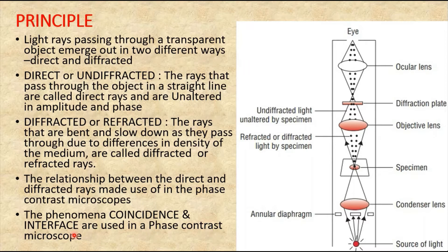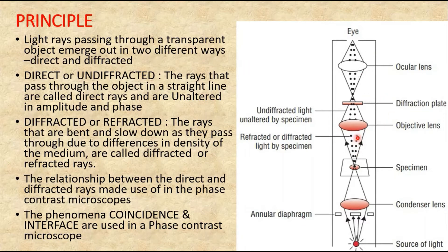When light rays pass through a transparent object, some rays experience a retardation of one quarter wavelength — that is, one fourth of the wavelength. This is called a phase shift. However, this phase shift does not cause any change in amplitude, so the objects appear transparent. The quarter wavelength phase shift is the key property utilized in the phase contrast microscope.